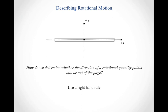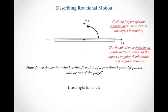How do we determine whether a rotational quantity points into or out of the page — into or out of the plane in which we're watching an object rotate? The answer is we use a right-hand rule. There's a whole series of right-hand rules with rotational motion, and the first one helps us figure out the direction of angular displacement and angular velocity. Take your right hand and curl your fingers in the direction the object is rotating — counterclockwise for this rod — and your thumb points out towards you.